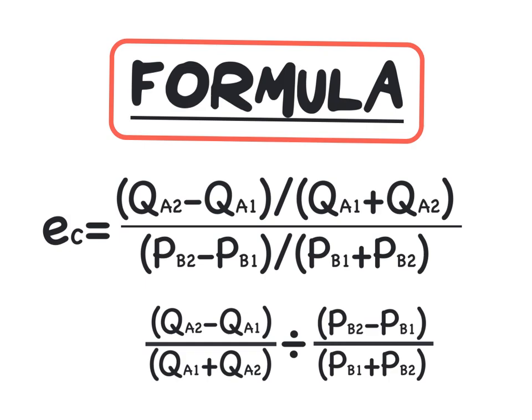Specifically: Q2 minus Q1 divided by Q1 plus Q2 for product A, and we will divide this by price 2 minus price 1 divided by price 1 plus price 2 for product B.